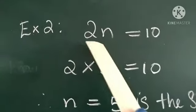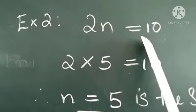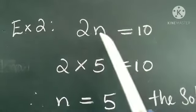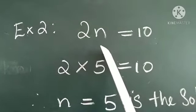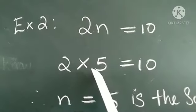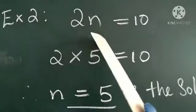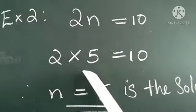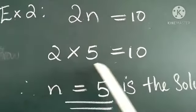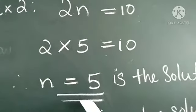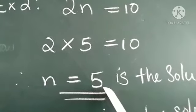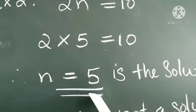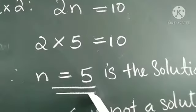Next example: 2n equal to 10. Here there is an equal symbol and one variable, so this is an algebraic equation. 2n means 2 into n. 2 into which number is 10? 2 into 5 equal to 10. So n equal to 5. The solution is n equal to 5, or the value of n is 5. We write: n equal to 5 is the solution.